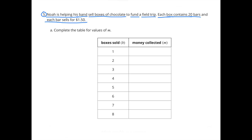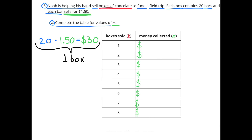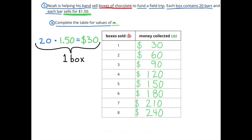Number 5. Noah is helping his band sell boxes of chocolate to fund a field trip. Each box contains 20 bars and each bar sells for $1.50. A. Complete the table for values of M (money collected), where B stands for boxes sold. With 20 bars per box at $1.50 each, 20 times $1.50 is $30, so each box raises $30. One box sold: $30; two boxes: $60; three boxes: $90. As the left column increases by one unit, the right column increases by $30. Eight boxes sold would be $240.